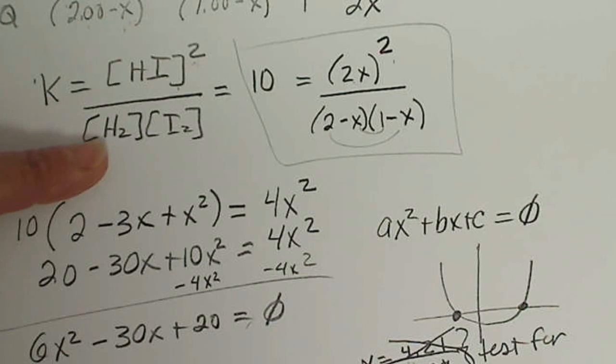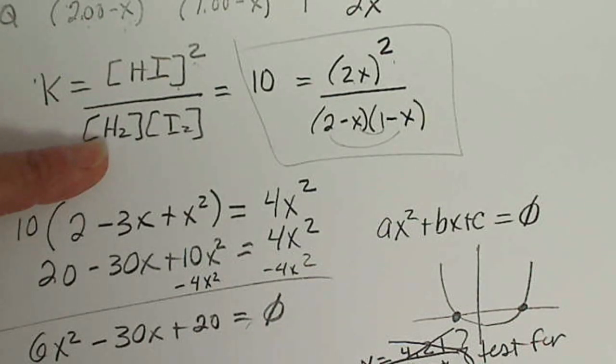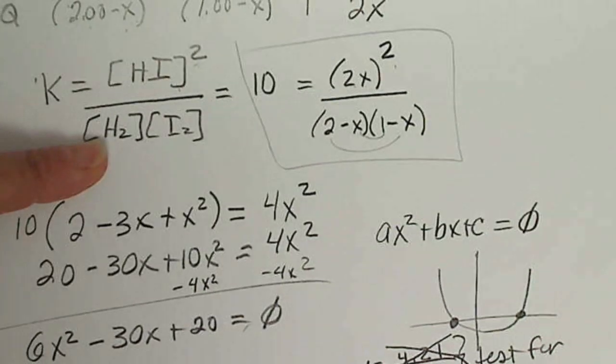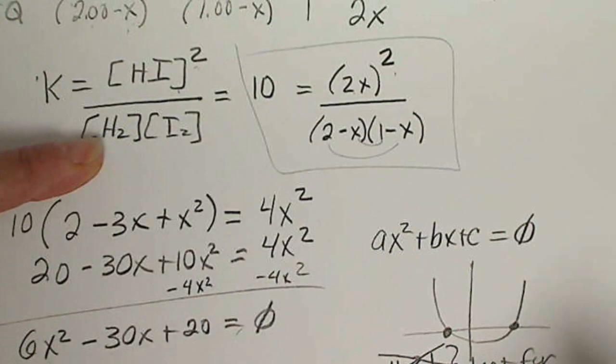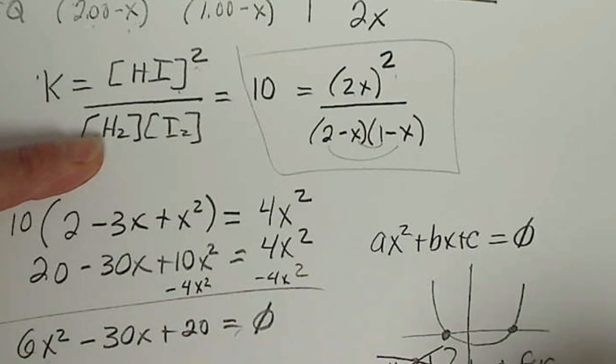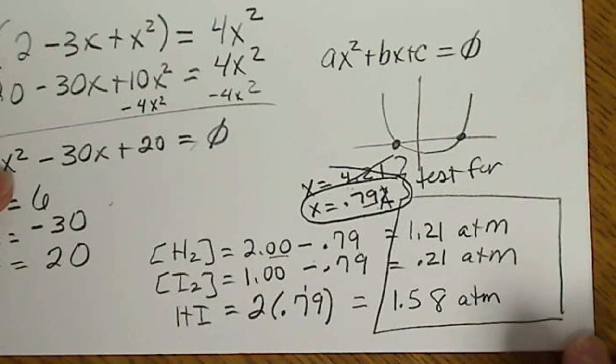I better do that on the calculator. 0.79 times 2 is 1.58. 2 minus 0.79, so this value would be 1.21 atmospheres.